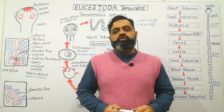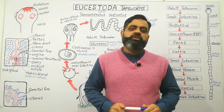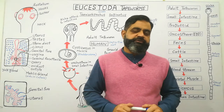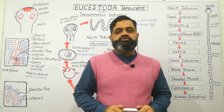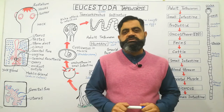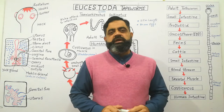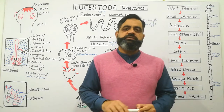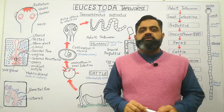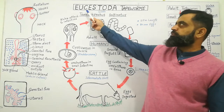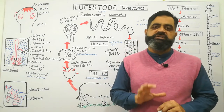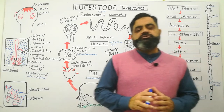Hello to all students, I hope you are doing fine. Today we are going to discuss the life cycle of Eucestoda. Eucestoda are usually known as tapeworms. They belong to phylum Platyhelminthes and class Cestoda. The true tapeworm belongs to subclass Eucestoda. 'Eu' means true and 'Cestoda' means girdle — a shape which is girdle-like.